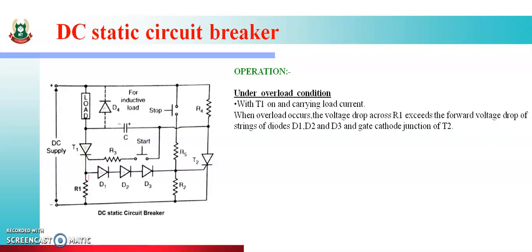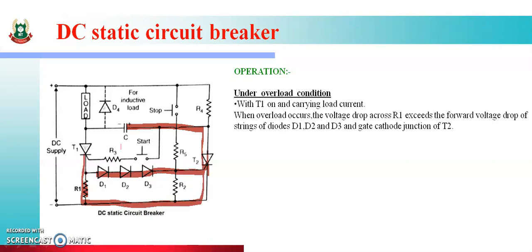Overload आने पर R1 के across voltage drop increase होगा। इस increase होने के कारण तीनों diodes D1, D2, D3 forward bias हो जाएंगे और इनके through T2 को gate current मिलेगा। जैसे ही T2 on होगा, charged capacitor का positive terminal T1 के cathode को और negative T1 के anode को connect हो जाएगा, जिससे T1 off हो जाएगा।